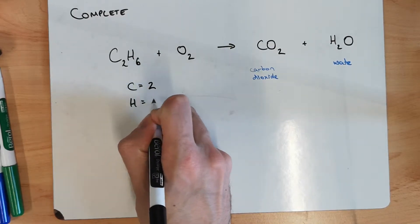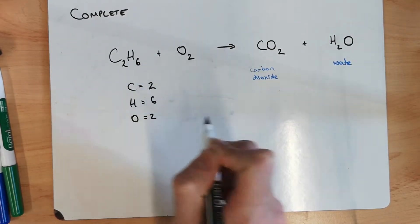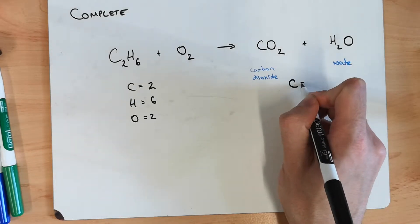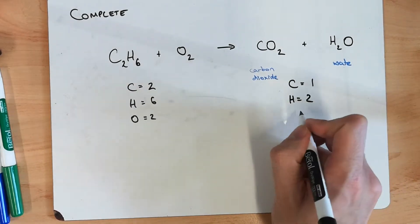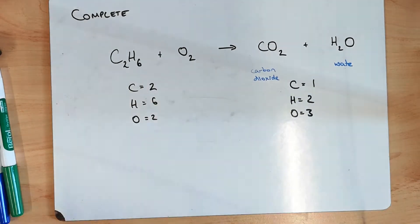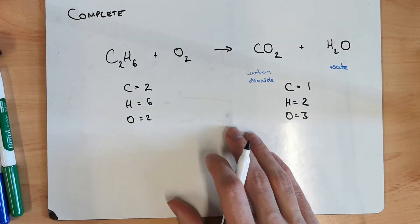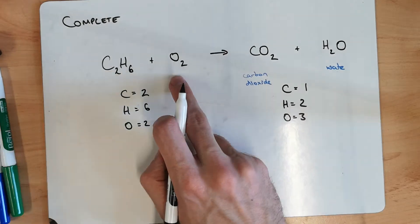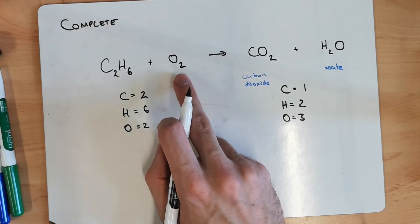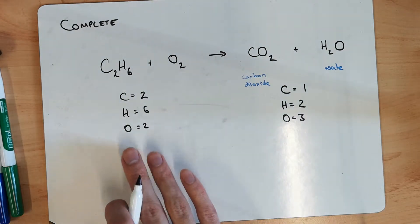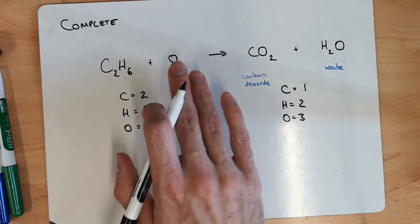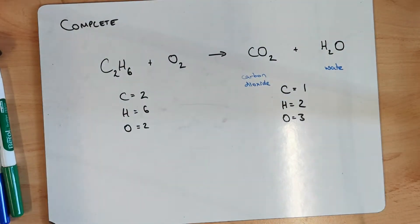So we've got two carbons here, six hydrogens and two oxygens. And on here we've got one carbon, two hydrogens and three oxygens. So the first thing I can see is that oxygen is by itself here. Carbon and hydrogen always bonded to something. So I'm going to leave oxygen until last. Because I can just come to this one and do whatever I need to do to that O2.